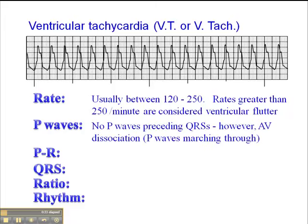P-waves are absent — at least we don't see P-waves preceding each QRS. If there was a P-wave preceding each QRS, then we'd have to consider that this is a supraventricular tachycardia with aberrancy. So P-waves would not be present prior to each QRS in VTAC.